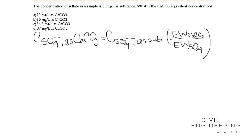Here our substance is sulphate, so we use the equivalent weight of sulphate. This formula is available in the environmental engineering book. If you go to the FE exam review manual, you can find it in the environmental engineering chapter, in the first chapter on water quality.